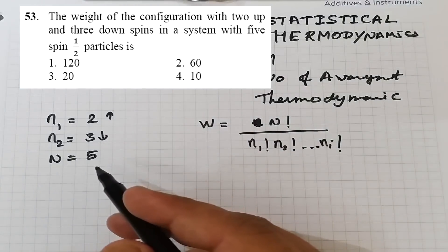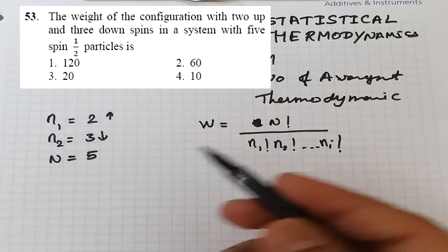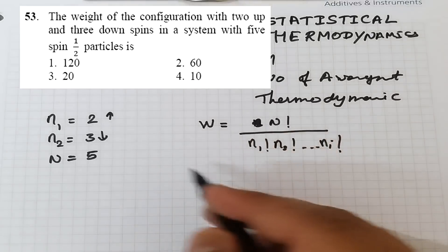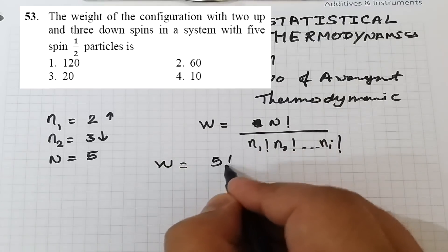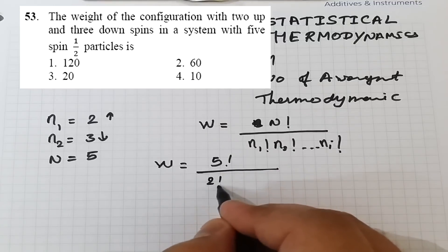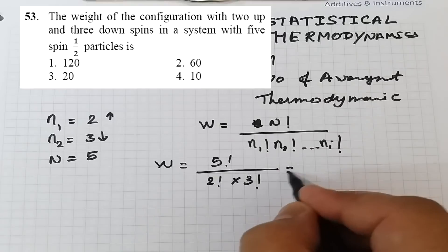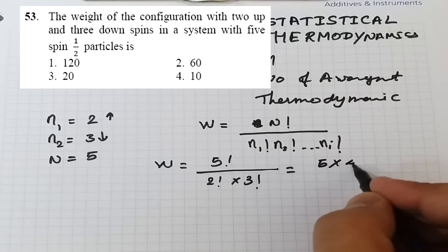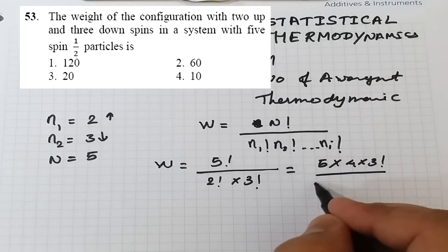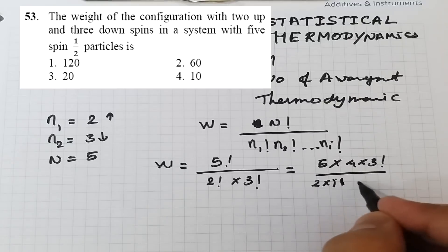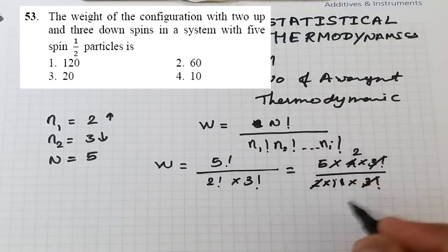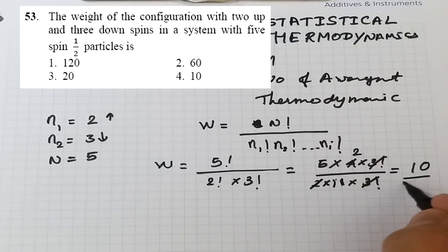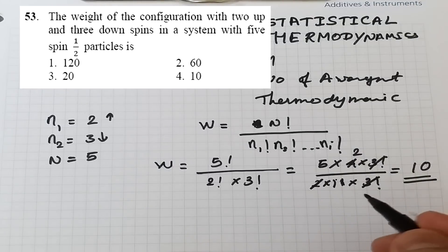When we fit the given data into the thermodynamic probability formula: W = 5! / (2! · 3!). We write 5! = 5 × 4 × 3!, and 2! = 2 × 1. Both 3! terms cancel out, leaving 5 × 4 / 2 = 10. So the answer is 10 — option D is correct.